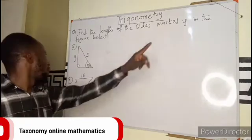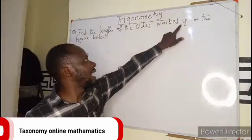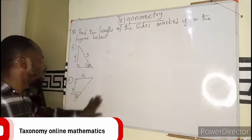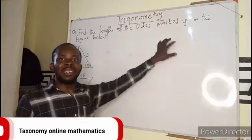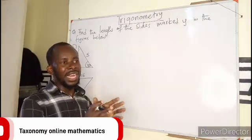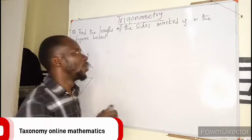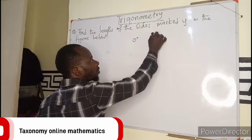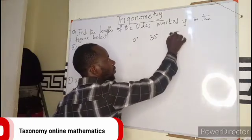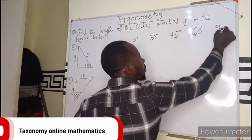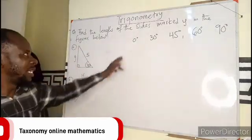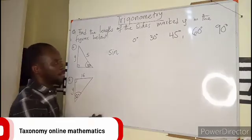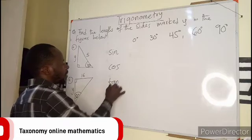There is a question in here where we are asked to find the side marked Y in the diagrams. Before we start with this, let's talk about the special angles. The special angles we have in trigonometry are 0 degrees, 30, 45, 60, and 90 degrees. We want to find these special angles with respect to the ratios: sine, cos, and tan.